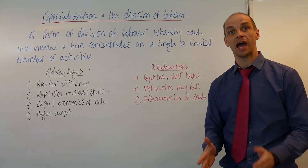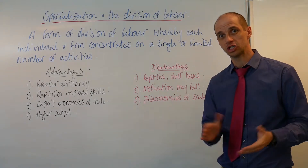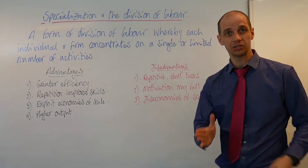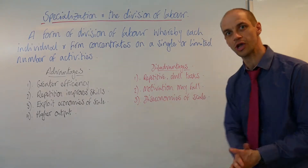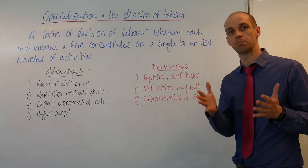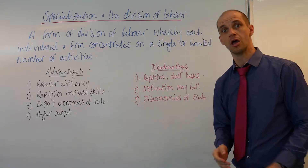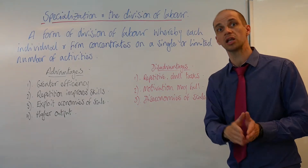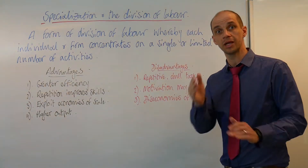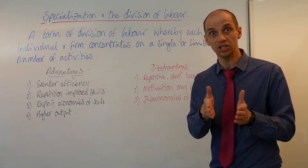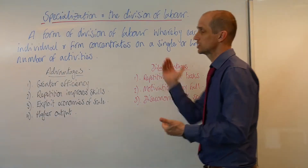Hi guys, so let's now take a look at Adam Smith's key theory: the division of labour and specialisation. Adam Smith first wrote about this in 1776 in The Wealth of Nations, and this was a case in point to understand how you could generate greater efficiency of output by splitting up a factory's assembly line into constituent parts, making sure that workers became brilliantly good at each of those particular tasks involved in assembling a given product.